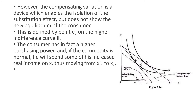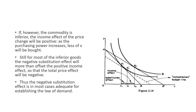The compensating variation is a device that enables the isolation of the substitution effect, but it does not show the new equilibrium of the consumer. The new equilibrium is defined by point E2 on a higher indifference curve IC2. The consumer has higher purchasing power at IC2 and can purchase more commodities. If the commodity is a normal good, the consumer will spend some of the increased real income on commodity X, moving from X1-dash to X2. However, if the commodity is inferior, the income effect of the price change will be positive — as purchasing power increases, less of X will be bought.